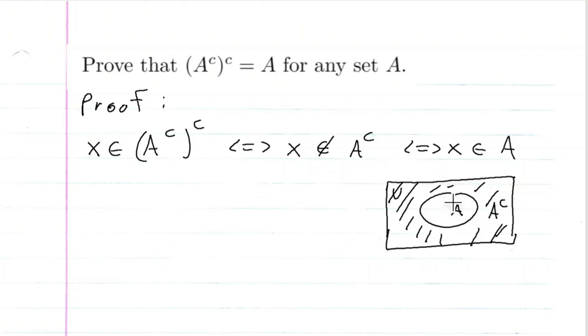Because that's the only other place X could be in the entire universal set. So that means if X is not in A complement, X must be in A. So we have that for every X, X is in A complement complement if and only if X is an element of A.